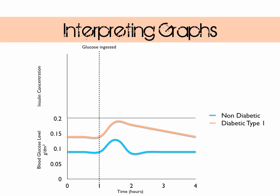The second graph shows changes in insulin concentration for the same two people. Note there are no units on the y-axis as this shows relative abundance, not actual amounts. In the non-diabetic, insulin levels begin to rise as soon as the meal is ingested — the rise in blood glucose is detected by the beta cells of the islets of Langerhans and insulin is secreted. Once blood glucose drops, negative feedback stops insulin secretion. The type 1 diabetic's insulin level remains consistently low with no response to raised blood glucose levels.